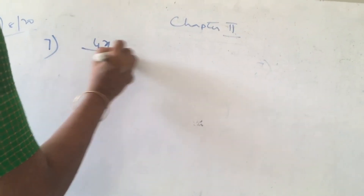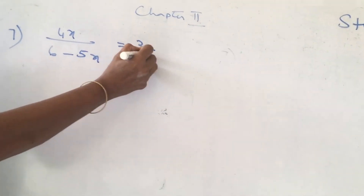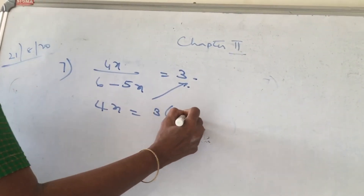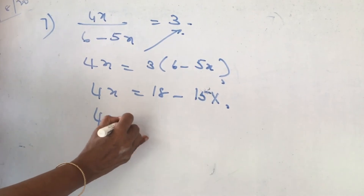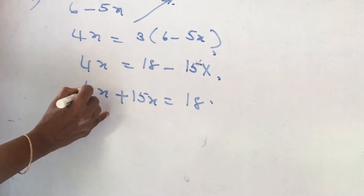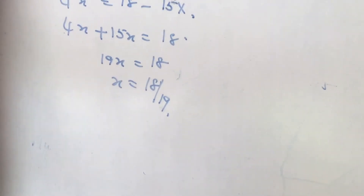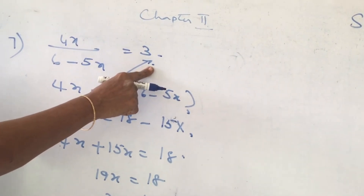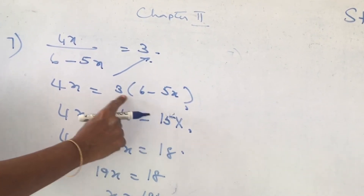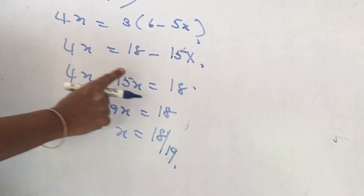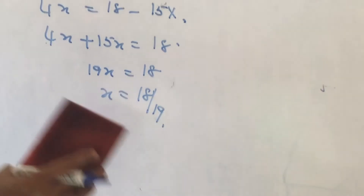Next: 4x divided by 6 minus 5x is equal to 3. Cross multiply: 3 into 6 minus 5x gives 18 minus 15x. x terms to the left, numbers to the right: 4 plus 15 gives 19x is equal to 18. Therefore x is equal to 18 by 19.